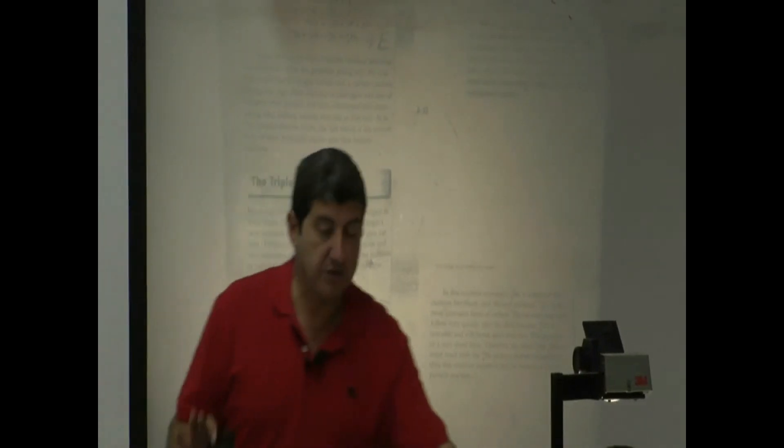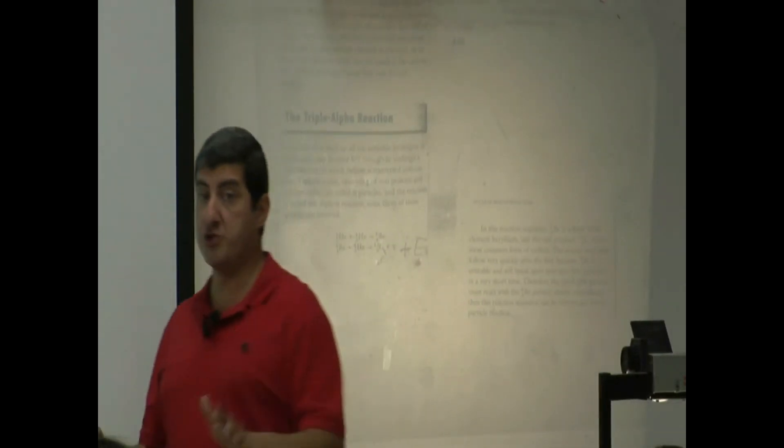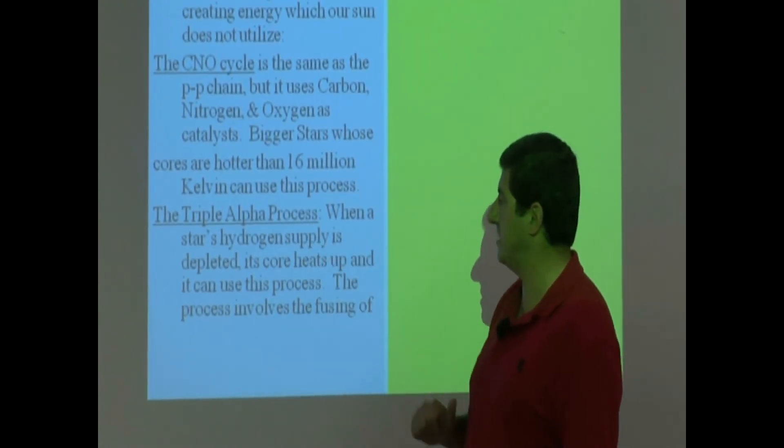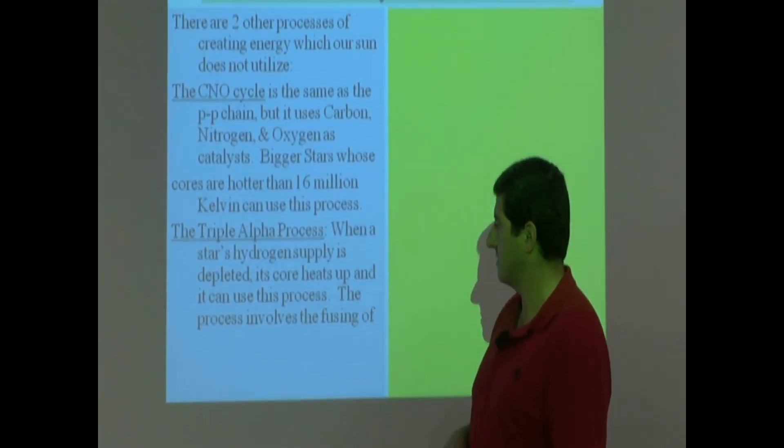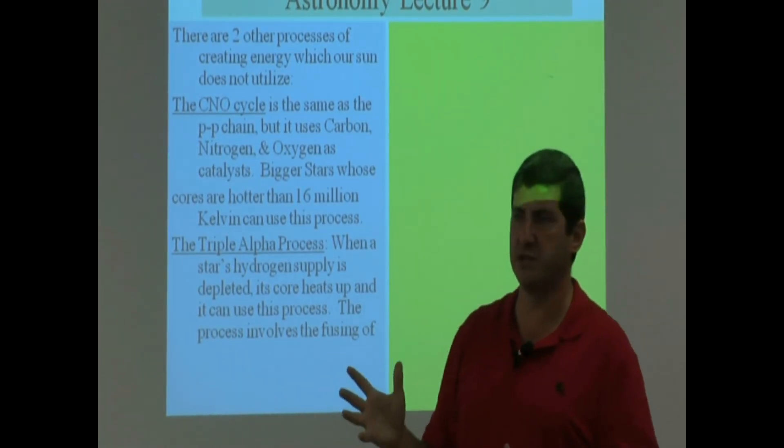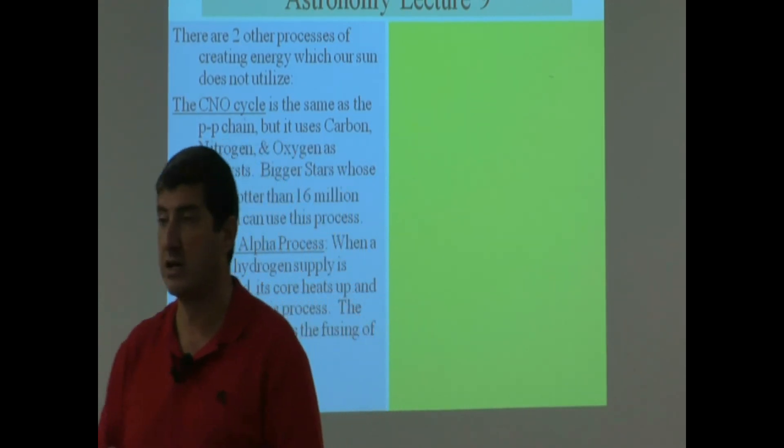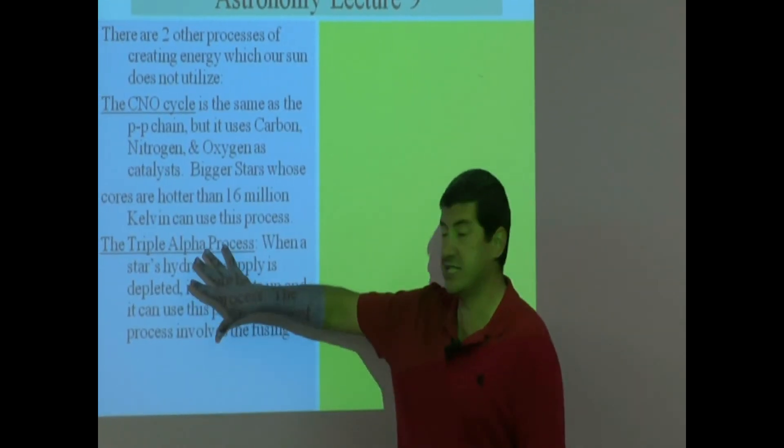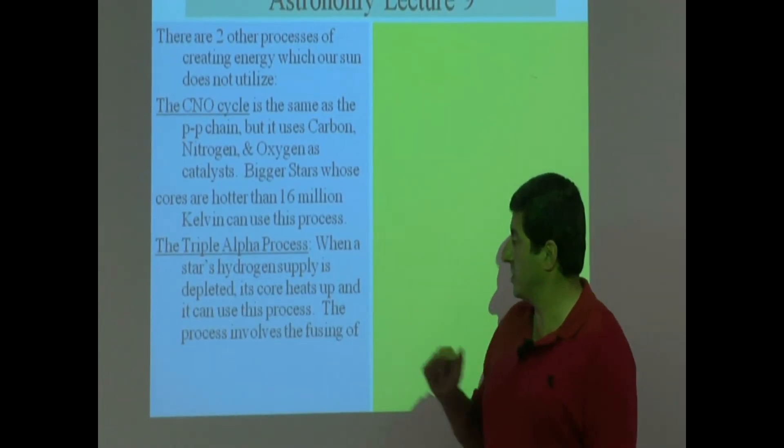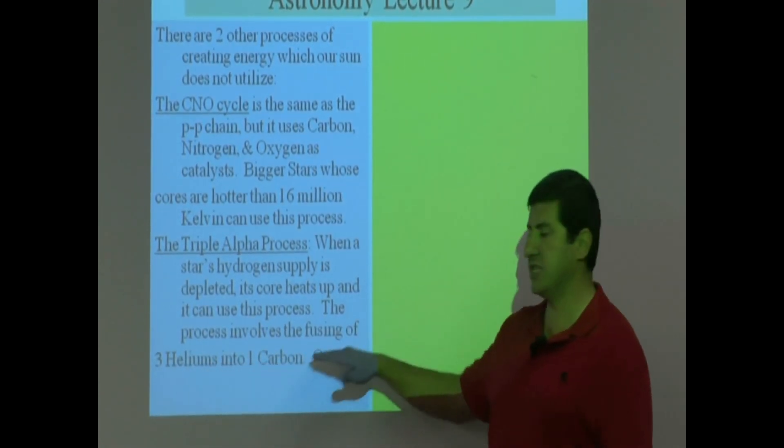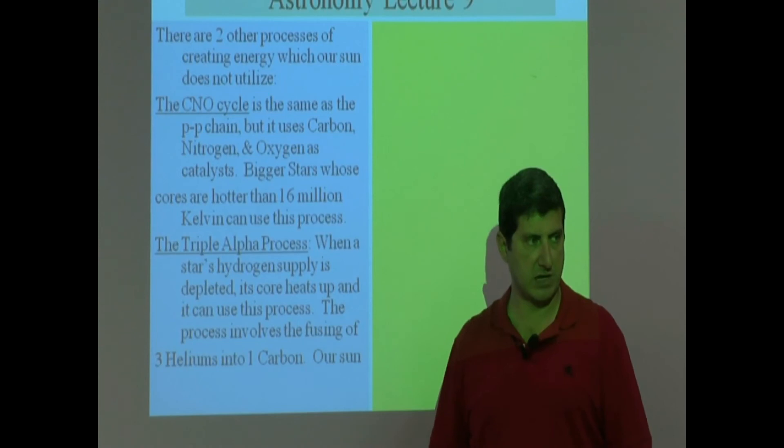The triple alpha process, that's this one down here. So this one is different. Our sun will one day use this process. It will never use this one, but it will use this one. When a star's hydrogen supply is depleted, its core heats up and it can use this process. So remember earlier, I said that our sun will die in 5 billion years, but it will take it 1 billion years to die. Why? Because while it's dying, it still can make energy by using this process. What is it doing? With this process, it's taking helium and it's fusing it into carbon.